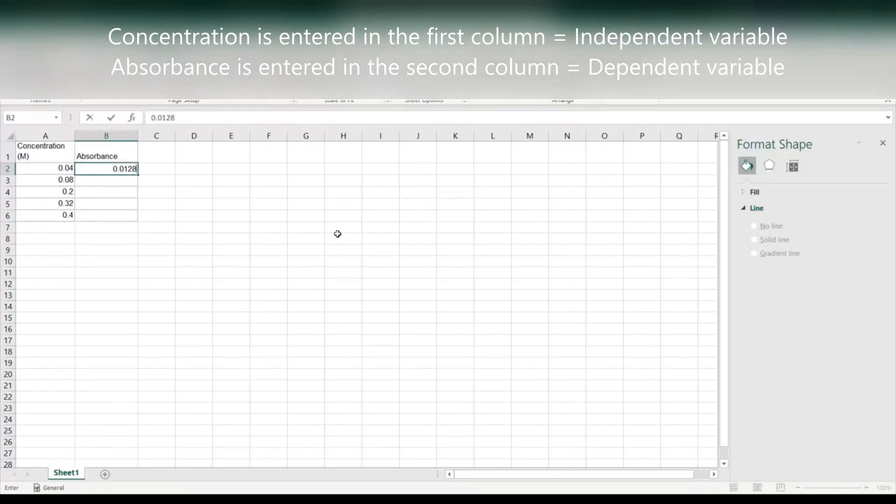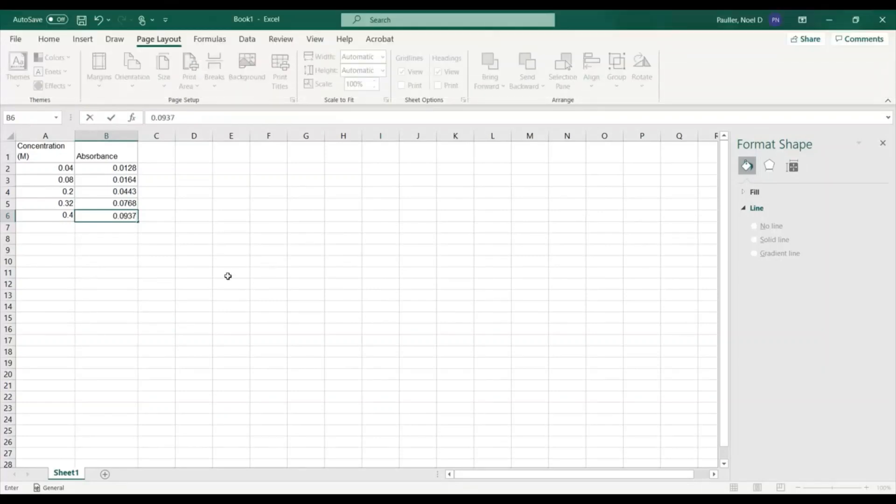I'll put concentration in the first column. That's the independent variable. I'll put absorbance in the second column. That's where I want the dependent variable. Once I have the data entered I can go about creating my graph.